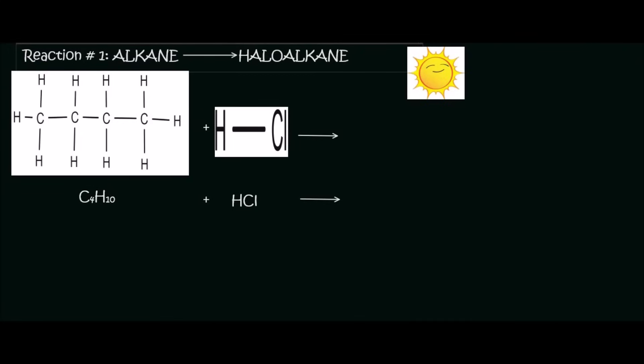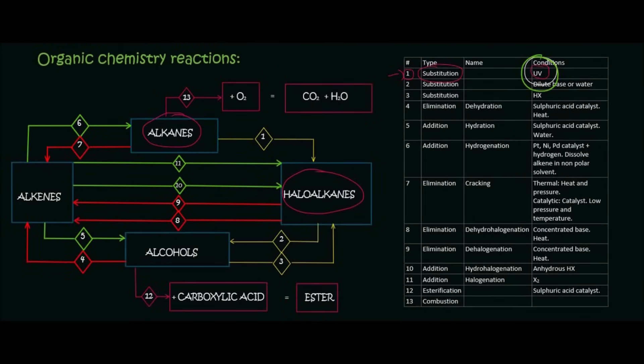So there we have our alkane, which is butane, which is C4H10, and then we're going to add some HCl to that, and we said that the product is going to be a haloalkane. And then remember if you look on the table over here we could see that we needed some UV energy, and that's why I've got the sun in the picture.